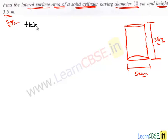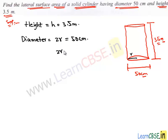The height of cylinder h equals 3.5 meters. Similarly, diameter is 2 times radius, which equals 50 centimeters. We know that 50 centimeters is 0.5 meters, therefore the value of r is 0.25 meters.